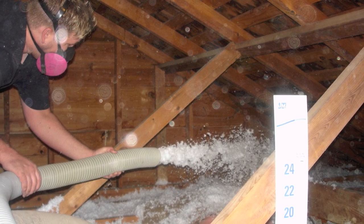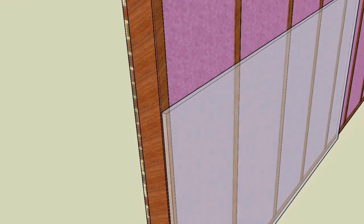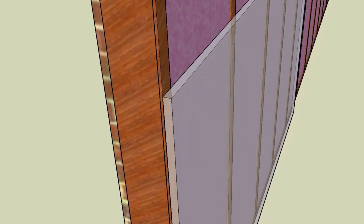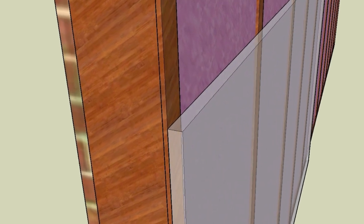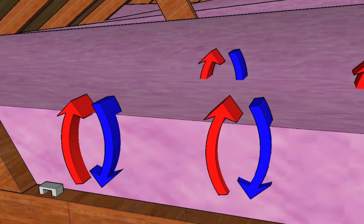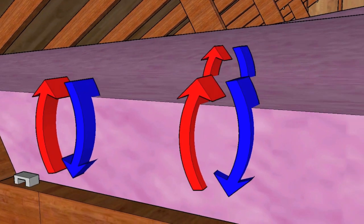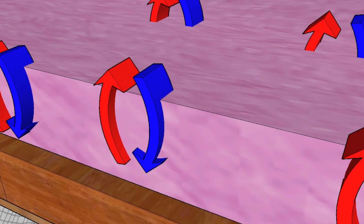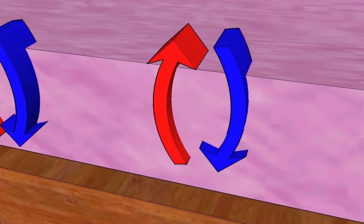However, to maximize R value, the air inside the insulation must be perfectly still or what we call dead air. Think about how a wall is built. The air inside the wall is pretty much dead or still air. The problem is your ceiling is just a wall turned sideways. Unfortunately, there's no air barrier on the top side. This allows air to flow into the attic insulation and significantly reduce its effectiveness.